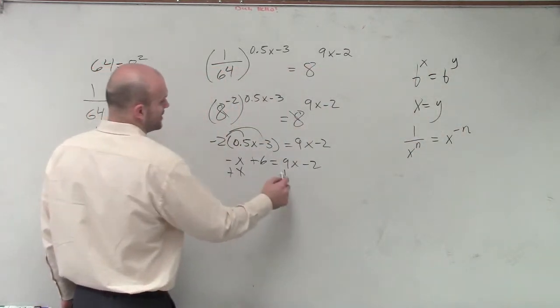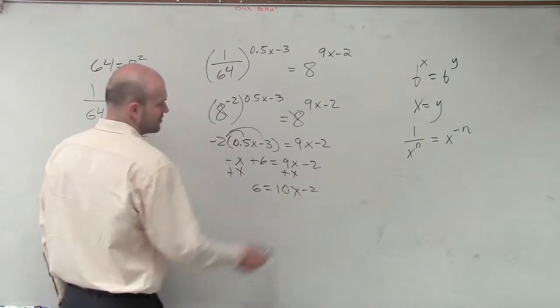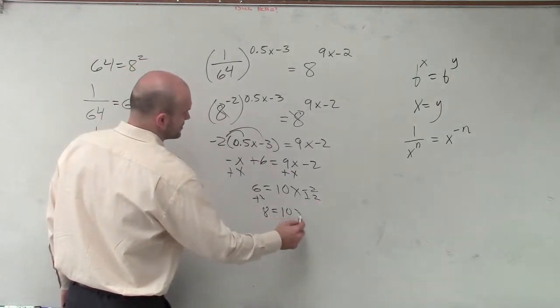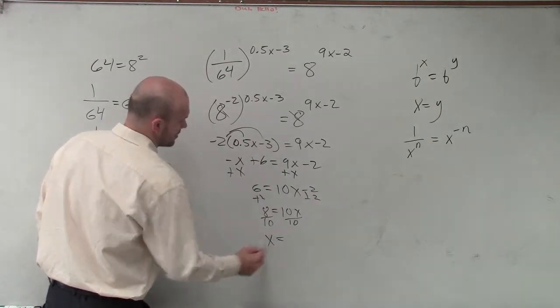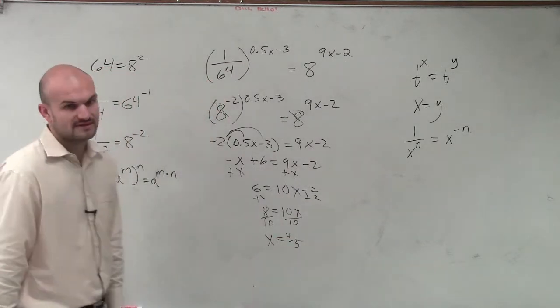So now let's just add them up. If I add an x over here, therefore I have 6 equals 10x minus 2. Add 2, 8 equals 10x. Divide by 10, x is going to equal 4 fifths.